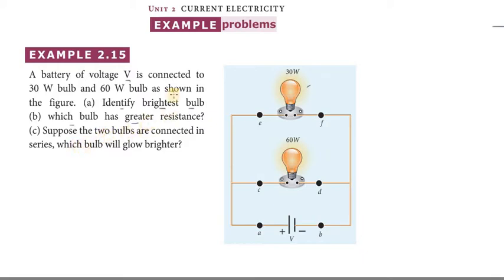First question, identify the brightest bulb. In parallel connection, we use the power relation P equals V times I. In parallel connection, the voltage is the same, so P is directly proportional to I.